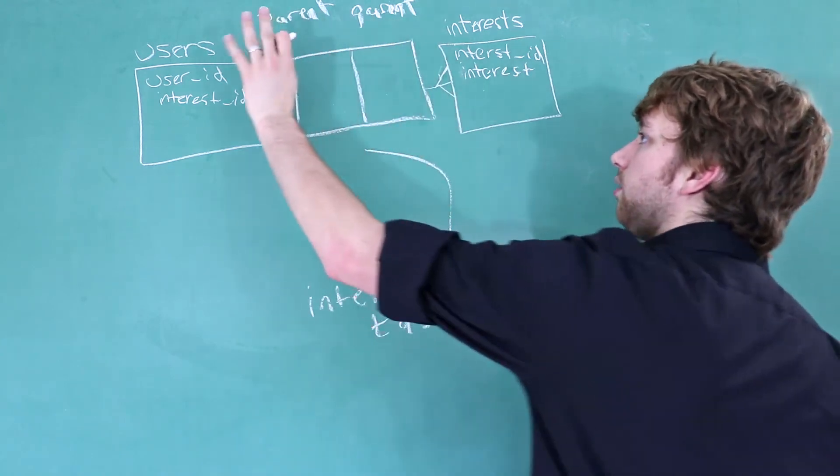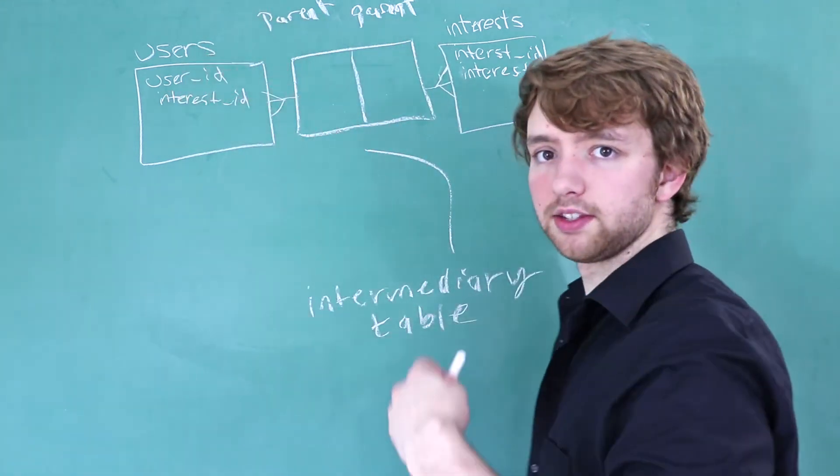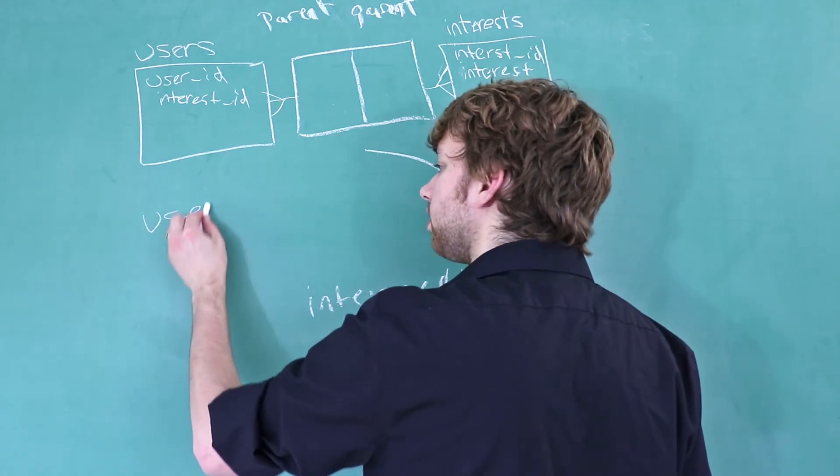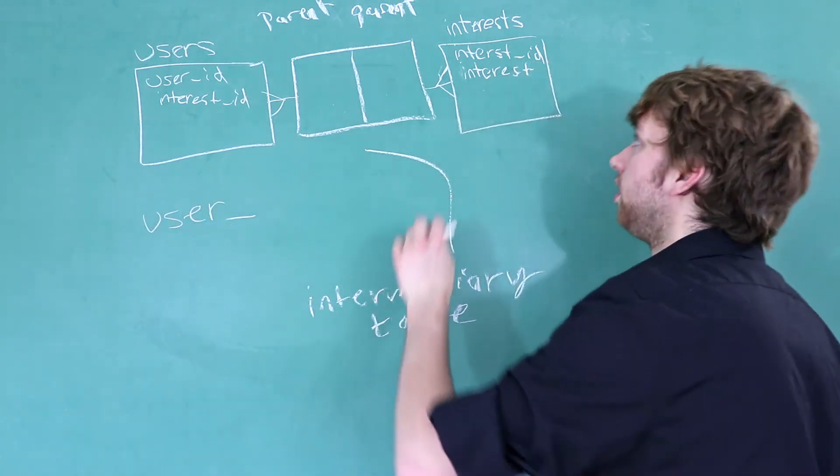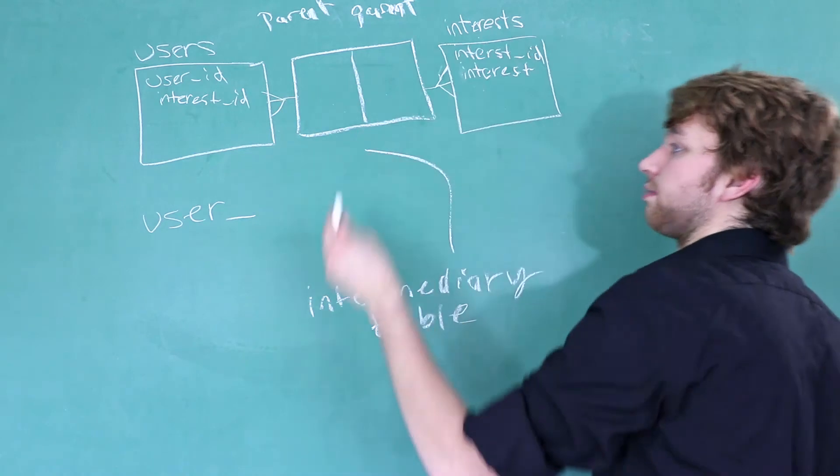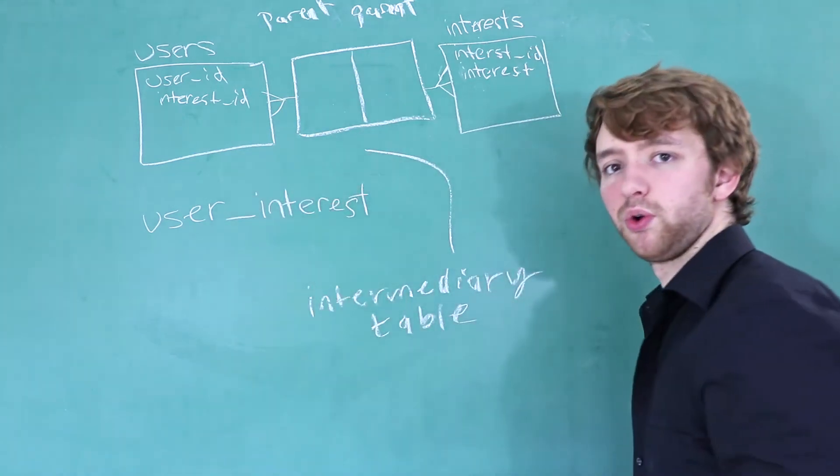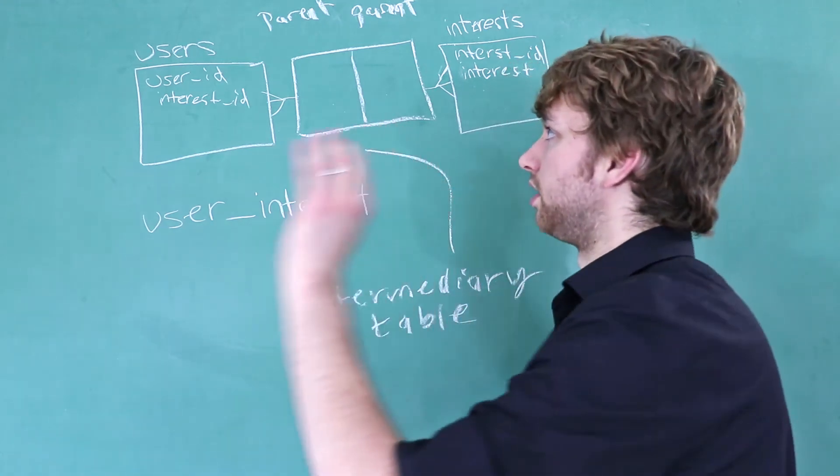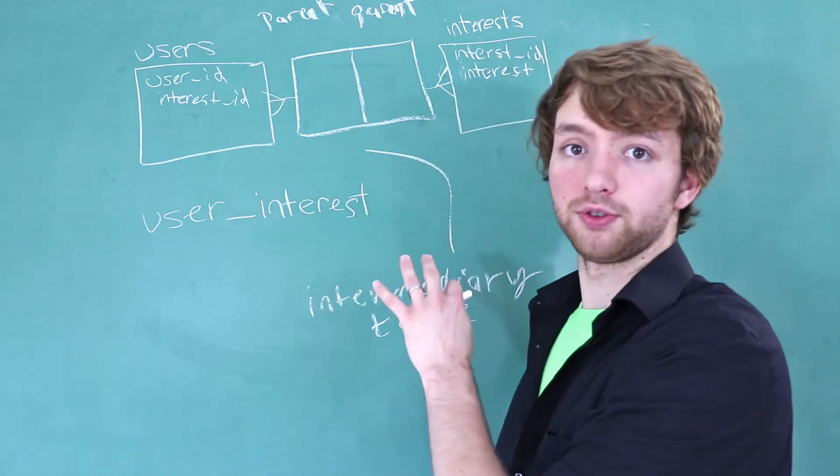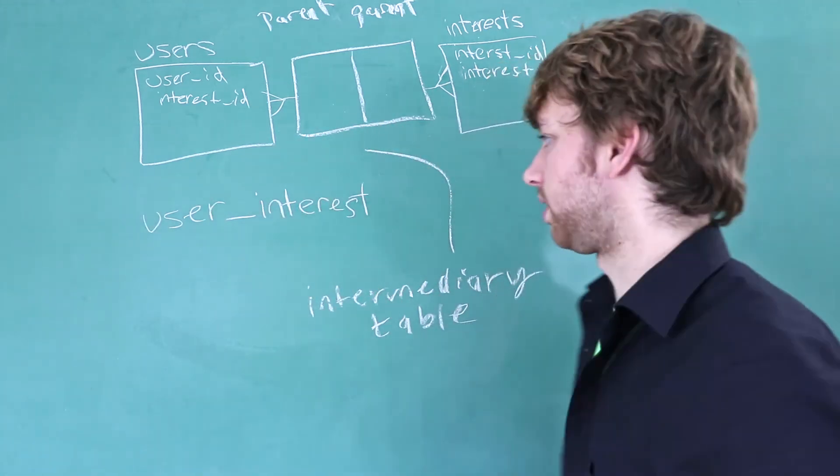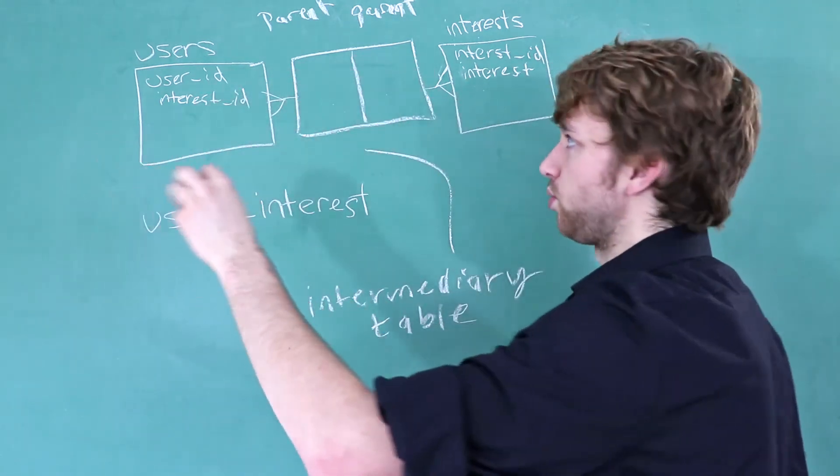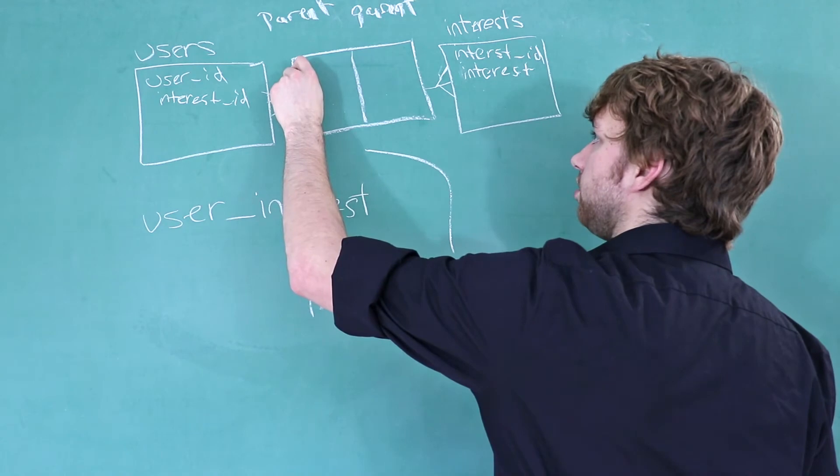The parent is going to be two parents in one table. And the way we're going to name this is we're going to take whatever table this is, and let's say we're going to make it singular. So it would be user underscore and then interests plural. And what this table is going to do is just list all of the associations between certain users and certain interests. The reason this works is because we can have one user in this column as many times as we want. So this is going to be the user ID column.